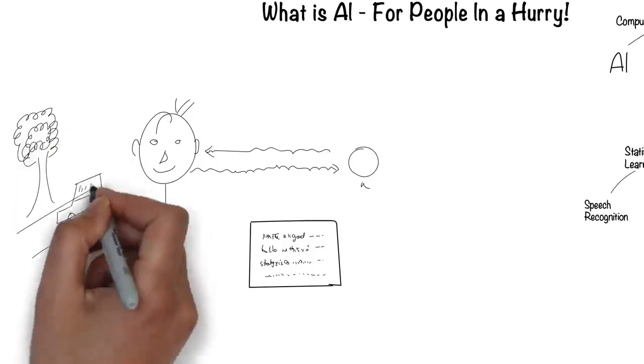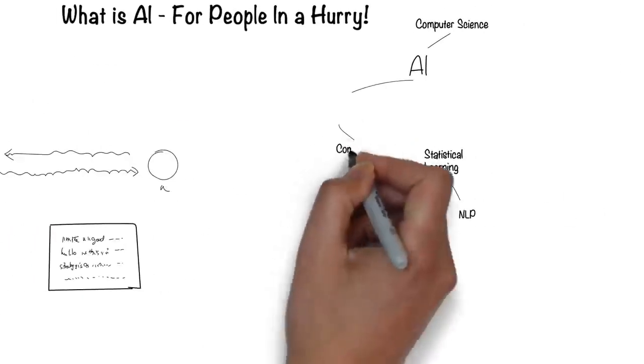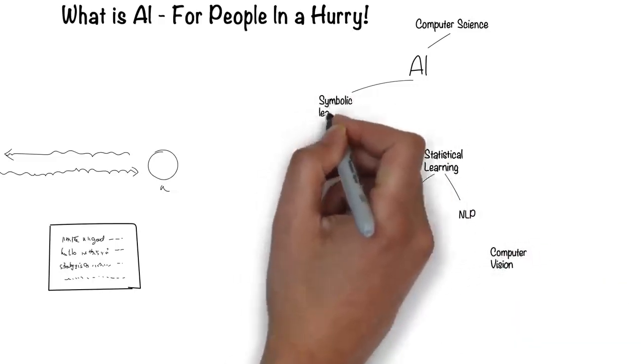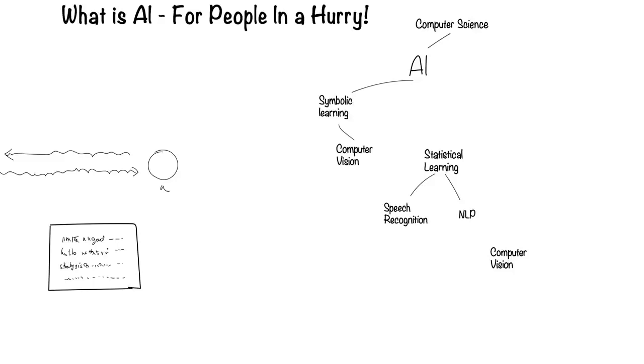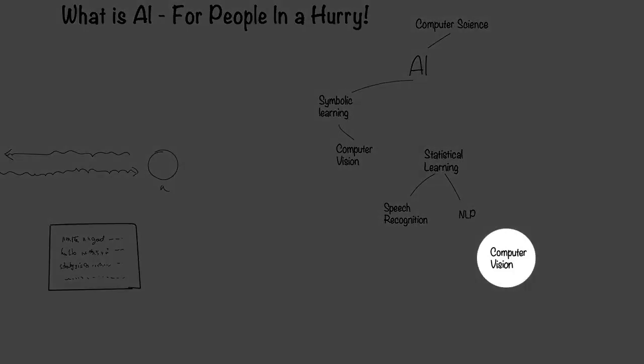Humans can see with their eyes and process what they see. This is the field of computer vision. Computer vision falls under the symbolic way for computers to process information. Recently, there's been another way, which I'll come to later.